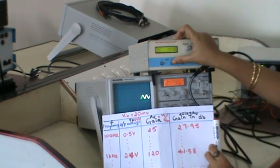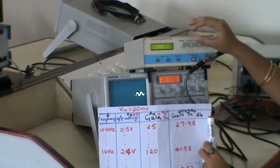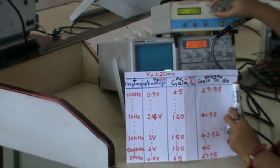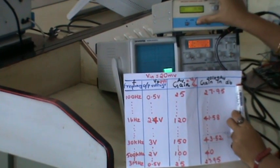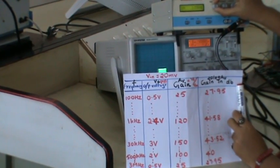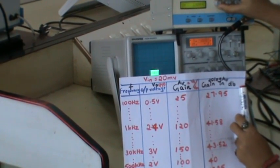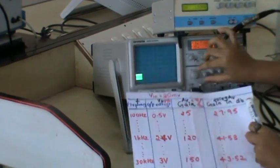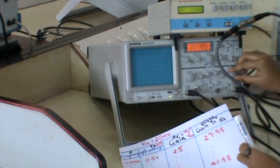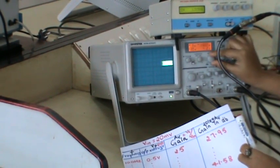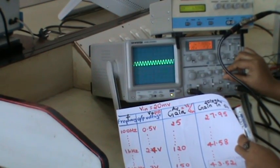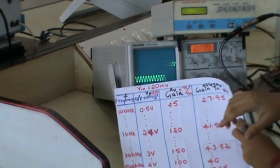As frequency is varied from 100 hertz in steps to 100 hertz, 300 hertz, we can see a gradual increase in the output voltage. At a frequency around 1 kilo hertz here, we can see the output voltage which is connected to channel 2 here. It is around 2.4 volt.